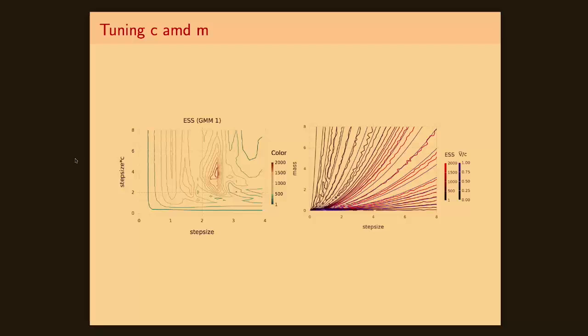If you look at the contour plots on the right, we have overlaid two contour plots, an ESS and the average speed divided by the speed of light for a range of values of mass and step size. What you can see from this plot is that the average speed actually correlates really well with the efficiency of your sampler. And as we have a monotonic relationship between the mass parameter and your average speed, this allows for easy adaptation.